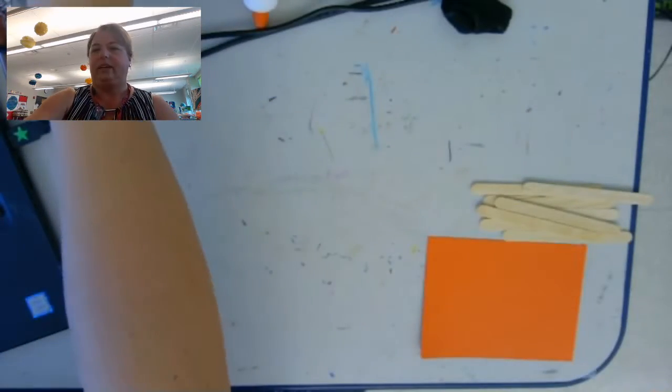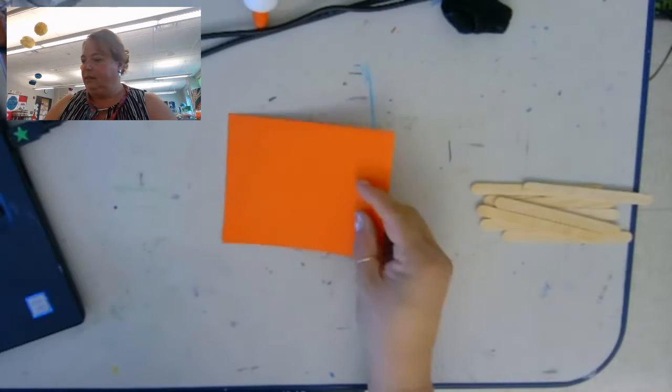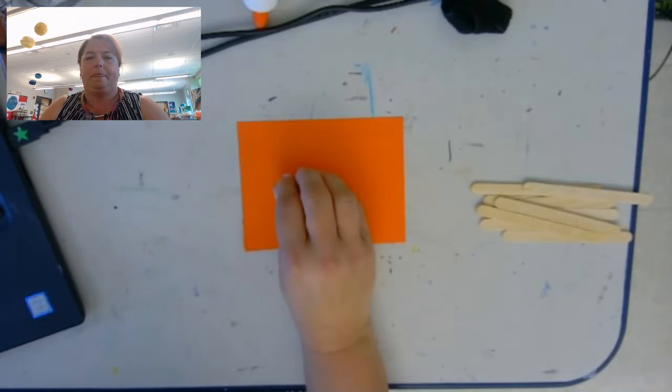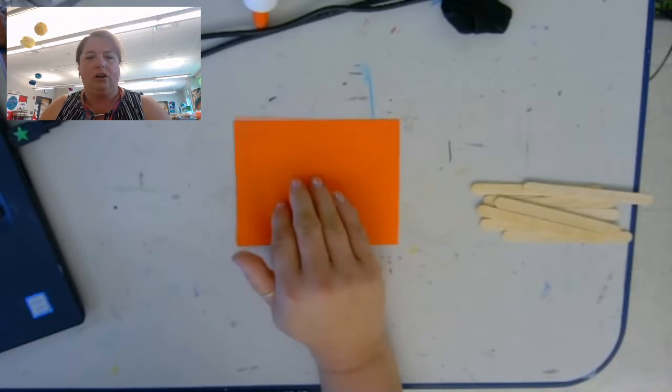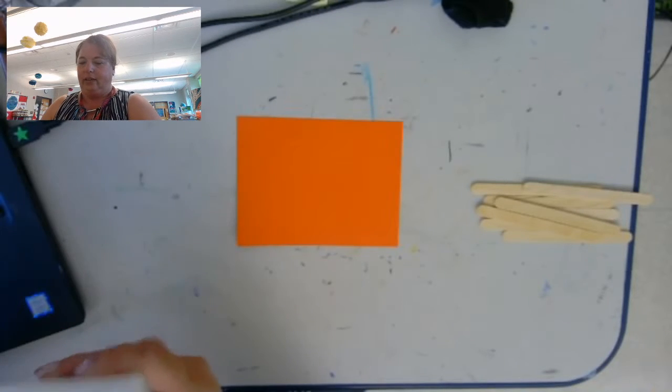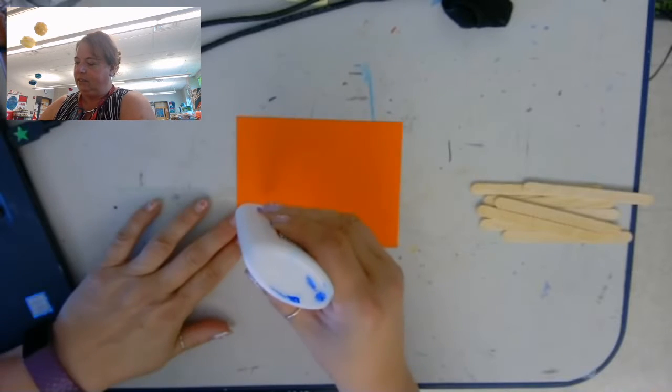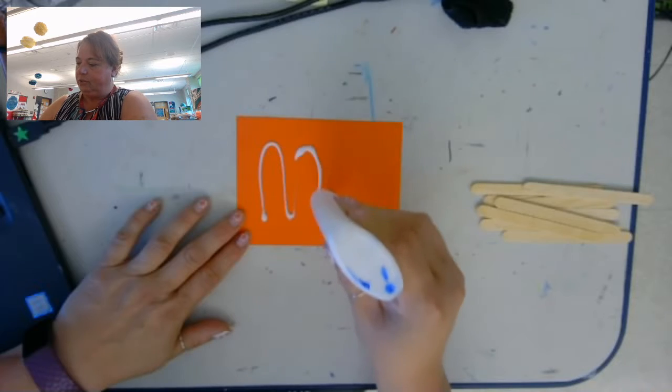Okay, so the first thing we have to do is get a base for our structure. So this is a piece of cardstock. Cardboard would be even better, but the first thing I'm going to do is glue eight popsicle sticks or craft sticks to this base, and I'm using Elmer's glue.